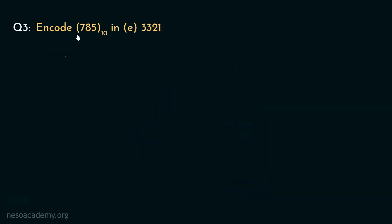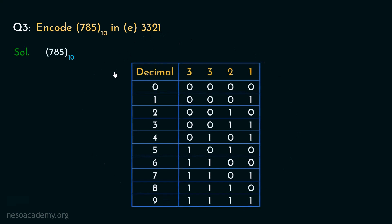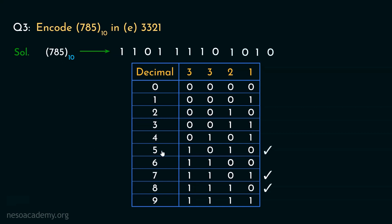Let's now move on to encoding 785 in 3321. We will again take the help of the familiar chart that we have seen in the previous session. Using this chart, the encoding for 7 is 1101, so let's enlist that. Coming to the next digit 8, the pattern is 1110, so we will enlist that too. Now the last digit is 5, and the encoding for 5 is 1010. So we end up acquiring the encoding of 785 in 3321, which is 1101 1110 1010.